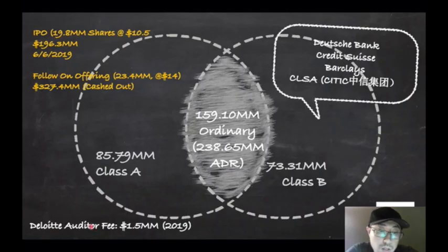Its auditor is Deloitte. Its annual fee for 2019 was $1.5 million. And the four investment banks involved in the IPO are Deutsche Bank, Credit Suisse, Barclays, and CLSA. The lead investment banks are Deutsche Bank and Credit Suisse, and Barclays and CLSA are syndicates. So CLSA is actually a subsidiary of CITIC, which is one of the biggest financial conglomerate in China.